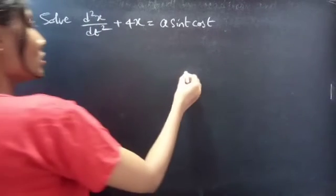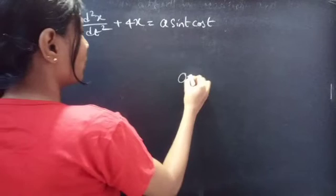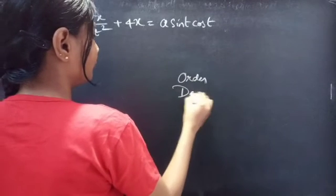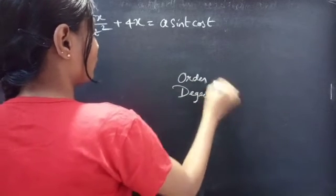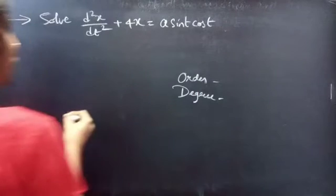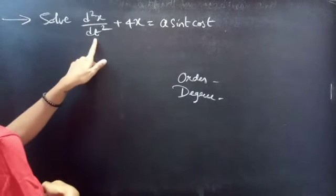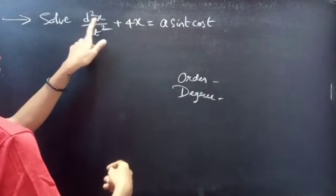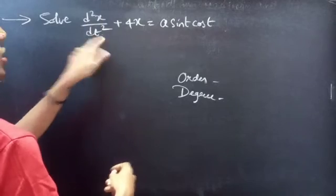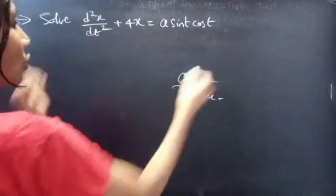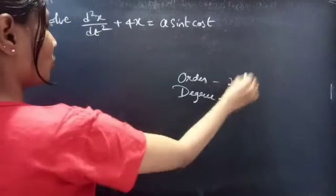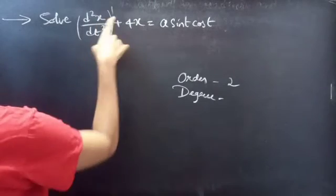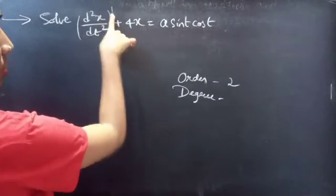Firstly, let's find the order and degree of the given differential equation. The highest derivative is d²x/dt², so the order is 2. The highest power of the highest derivative gives the degree, so the degree is 1.